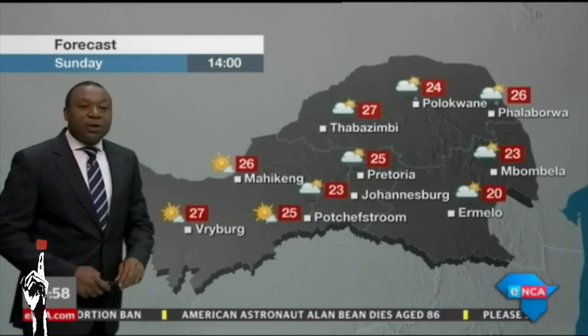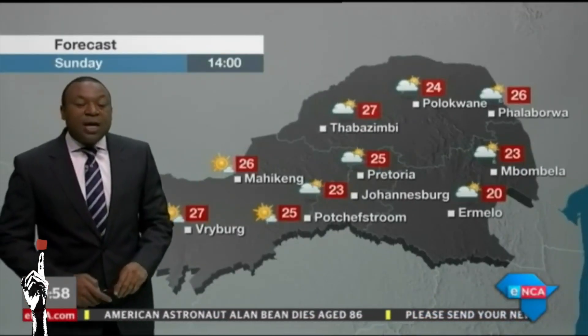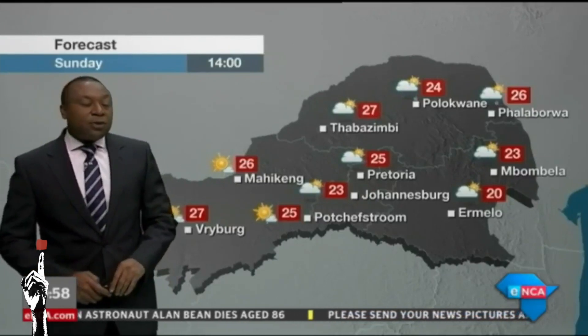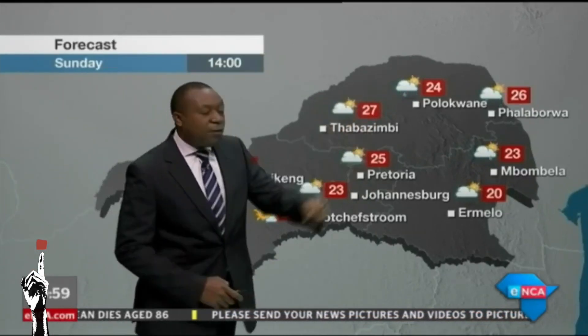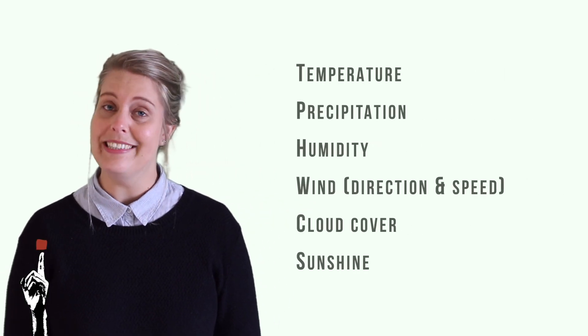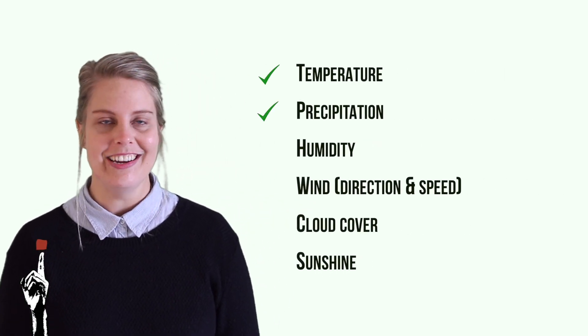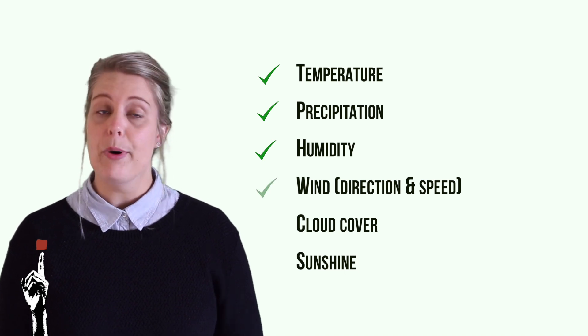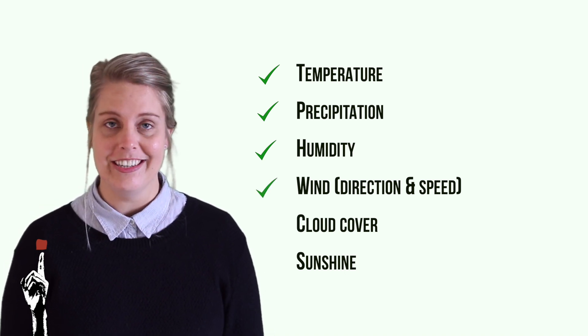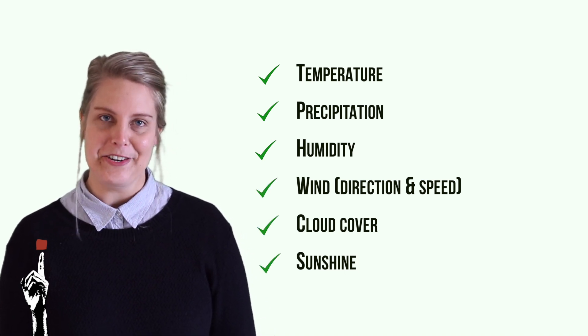If you watch the weather on the news you will notice that the forecasting is reduced to a few pictures and numbers. There are many factors that need to be considered when interpreting the weather. The weather elements that we will be discussing today will be temperature, precipitation, humidity, wind — both speed and direction — clouds, and sunshine.